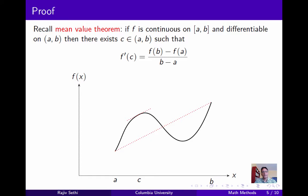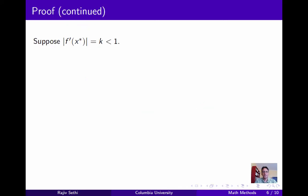So let's prove this claim. We're going to use the mean value theorem to do this. If f is a continuous function on the interval [a, b], and differentiable in the interior of this interval, there exists a point c such that the slope of the function at c is equal to the slope of the line connecting the two endpoints corresponding to a and b. Now suppose that the absolute value of the slope of the function f at the fixed point x-star is equal to some number k strictly less than 1.